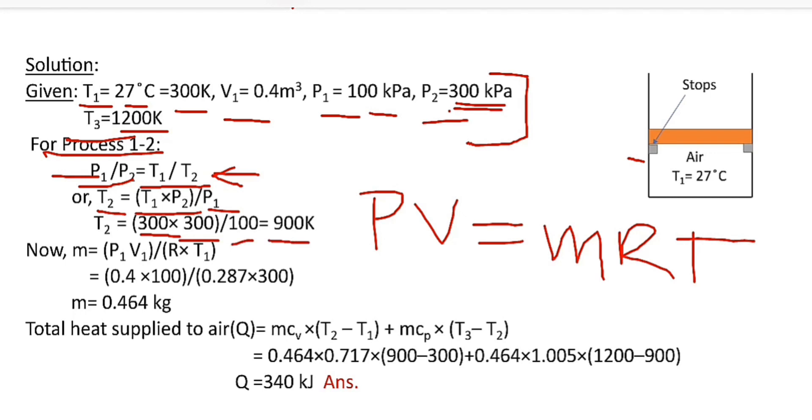Since we have to find the magnitude of heat given to the air and we know the formula of heat is equal to mc delta T, first we need the value of m.